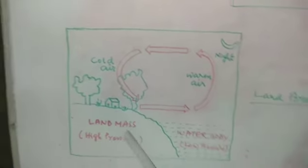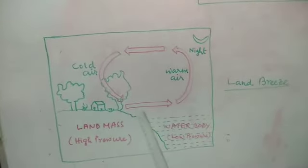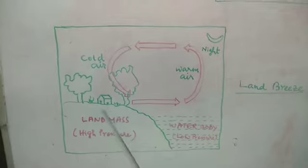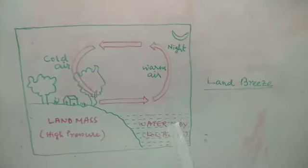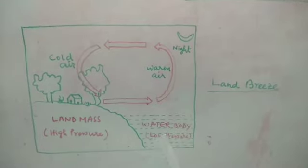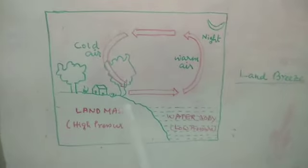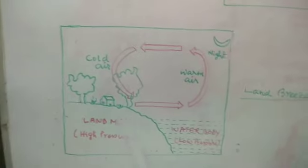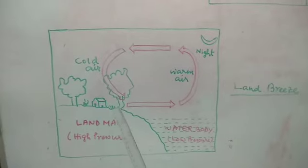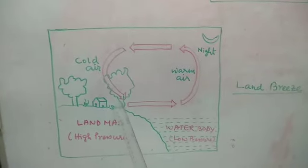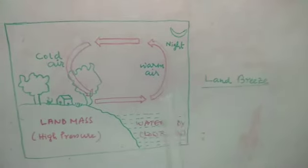After sunset, the land surface releases heat, so the temperature of the land surface decreases compared to the water body or water masses. That is why in the case of water masses there is low pressure and in the case of land masses there is high pressure. Following the normal trend, wind in nighttime blows from land masses to water bodies or water masses, and this is called land breeze.